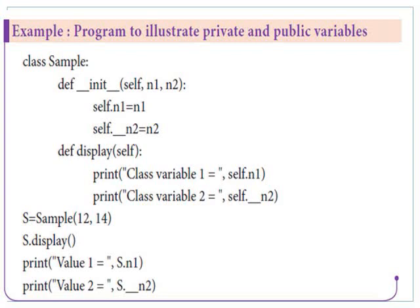The class variable sample is instantiated. We pass two argument values: first is 12 and next is 14. So 12 is assigned to n1 in the function definition, and 14 is the value assigned to n2.